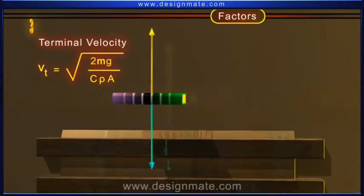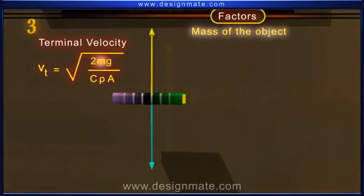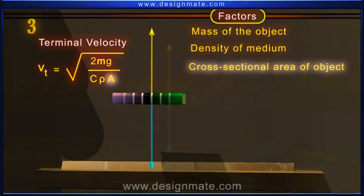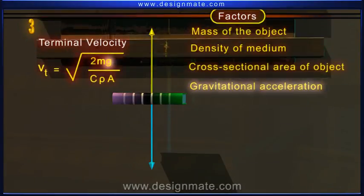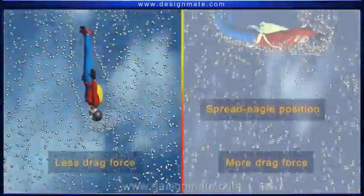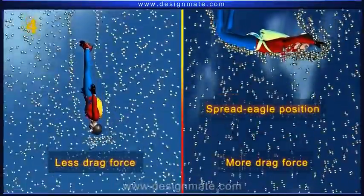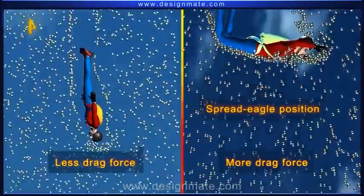Terminal velocity depends on mass of the object, density of medium, cross-sectional area of object and gravitational acceleration. Skydivers change their posture to manipulate the drag force acting on them and hence the terminal velocity.